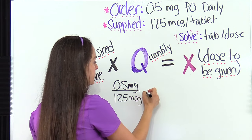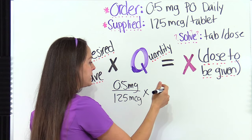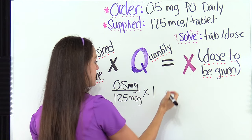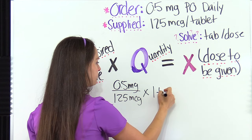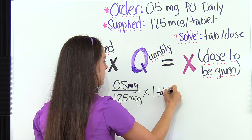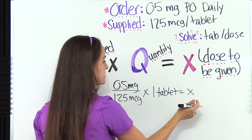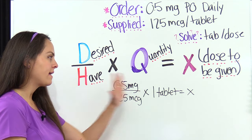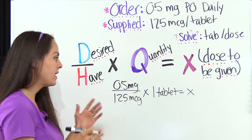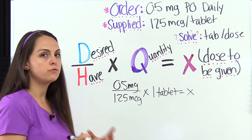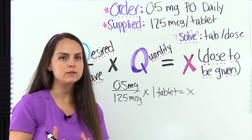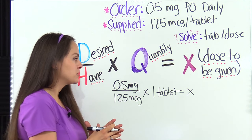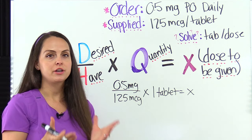We multiply that by the quantity — one tablet, because one tablet equals 125 micrograms. That equals X, what we're solving for. Now we can't finish this formula because the units do not match — you always want to double check that before you start solving. So to make them match, we have to convert; this is the extra step we need to take.